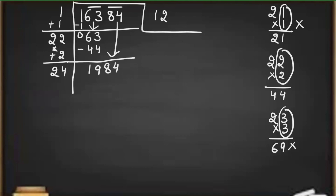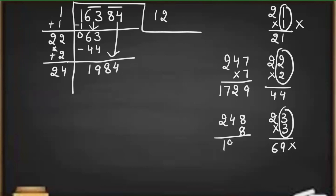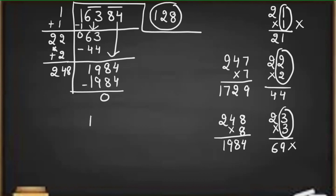Now for 1984, we try digit 7: writing 247 multiplied by 7 gives 1729. Then trying 8: writing 248 multiplied by 8 gives exactly the number needed, so we write 8 in the answer. The remainder is 0, which means 16,384 is a perfect square and the answer is 128 — the same answer we got using the prime factorization method.